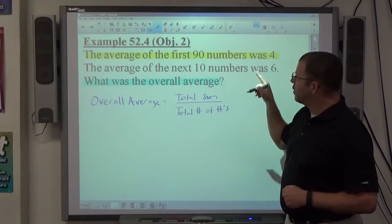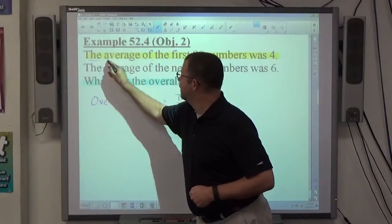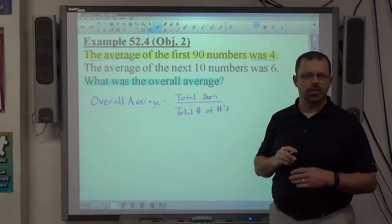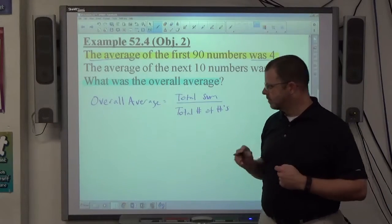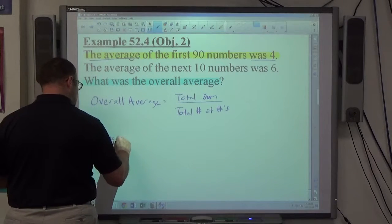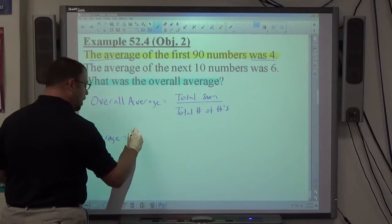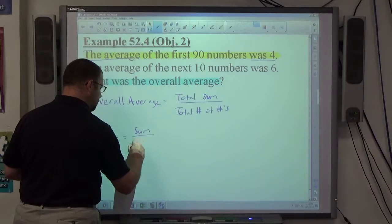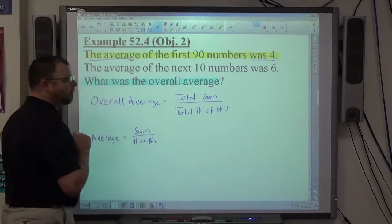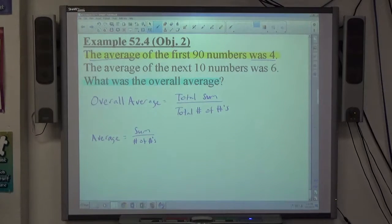So, the average was 4. How does averaging work? Just in general, averaging. Average equals the sum over the number of numbers, right? That's how regular averaging works, right?